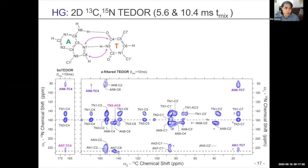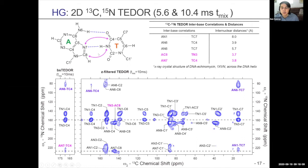Likewise, for the Hoogstein form, we look for indicative peaks. The TN3-AC8 distance — the correlation between this nitrogen and this carbon — pops up right away as a distinct peak in the Z-filter TEDOR spectrum. Applying the band-selective pulse to TC4, we also see AN7-to-TC4 resonances appear. These are the two key peaks indicating a Hoogstein form, and they would not be possible in Watson-Crick geometry.